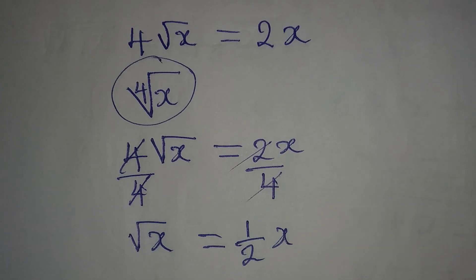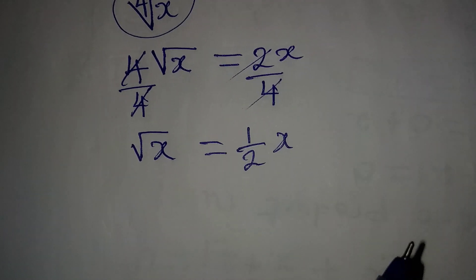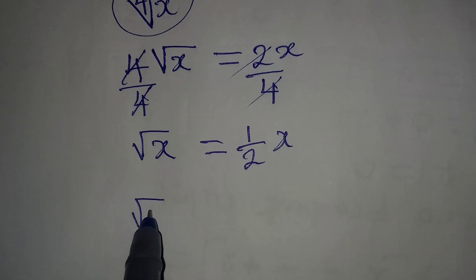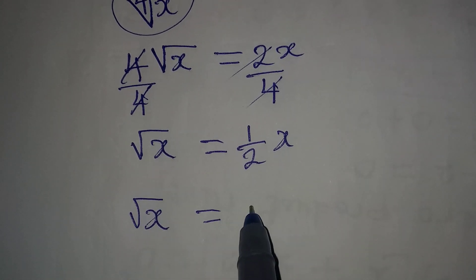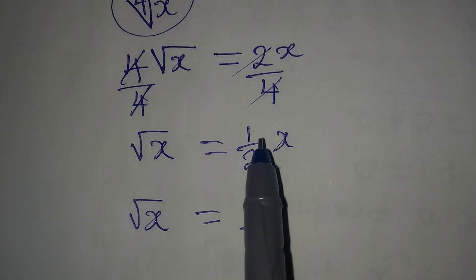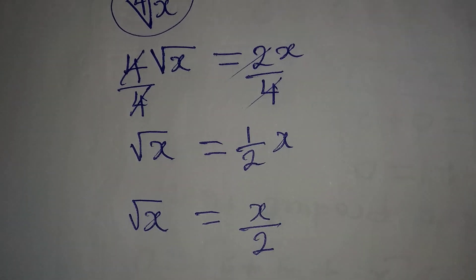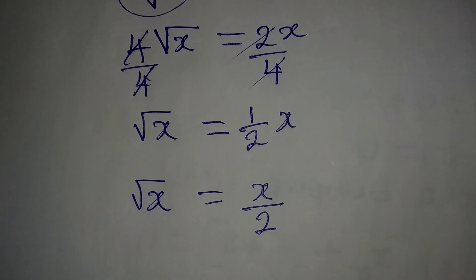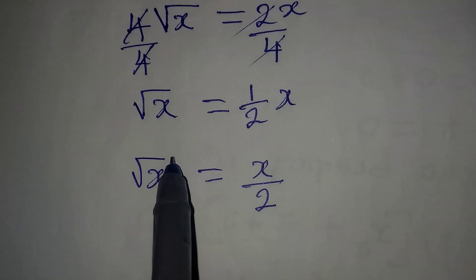If we continue with this, √x = x/2 because 1 times x is x. Now the next point is to take the square of both sides.